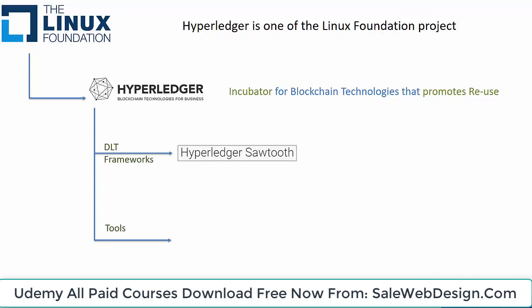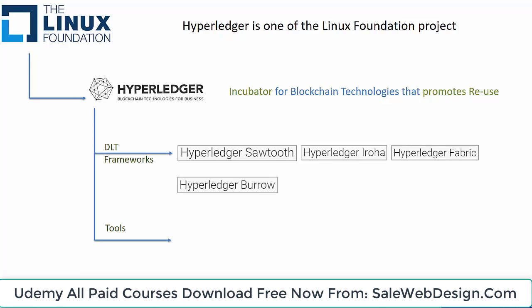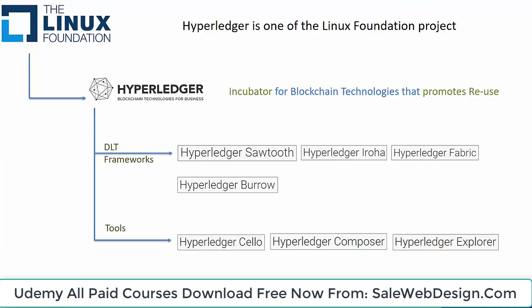Sawtooth is led by Intel. Iroha is led by Suramitsu. IBM donated the source code for its blockchain initiative called OpenBlockchain, and combined with source code from partners such as Digital Assets, it incubated the Hyperledger Fabric project. The most recent addition is Hyperledger Burrow from Monax, which is known for creating a permissioned chain on top of Ethereum blockchain technology. The second category of initiatives is tools, and there are four active tool projects.